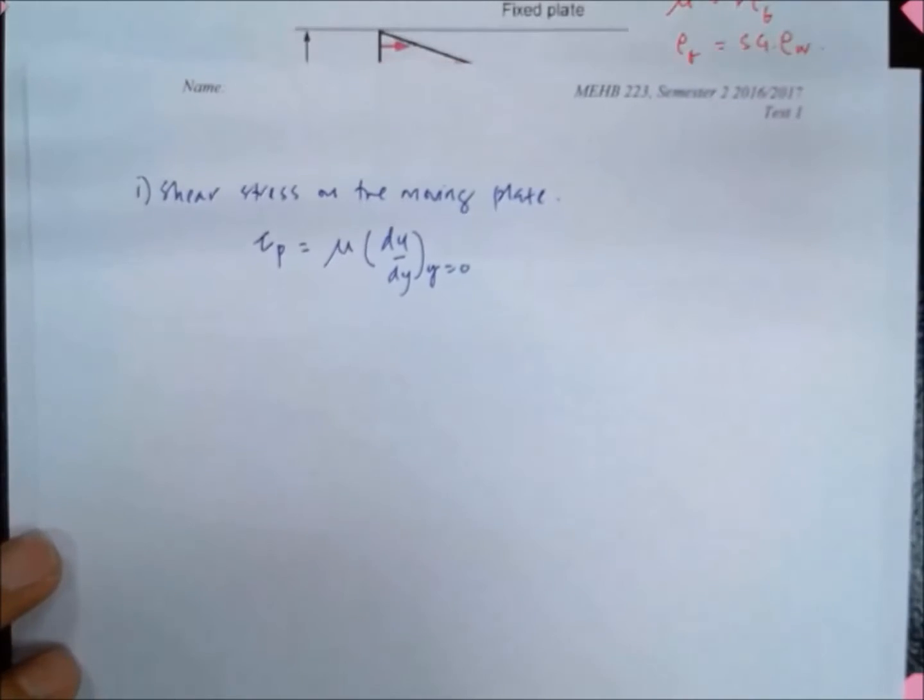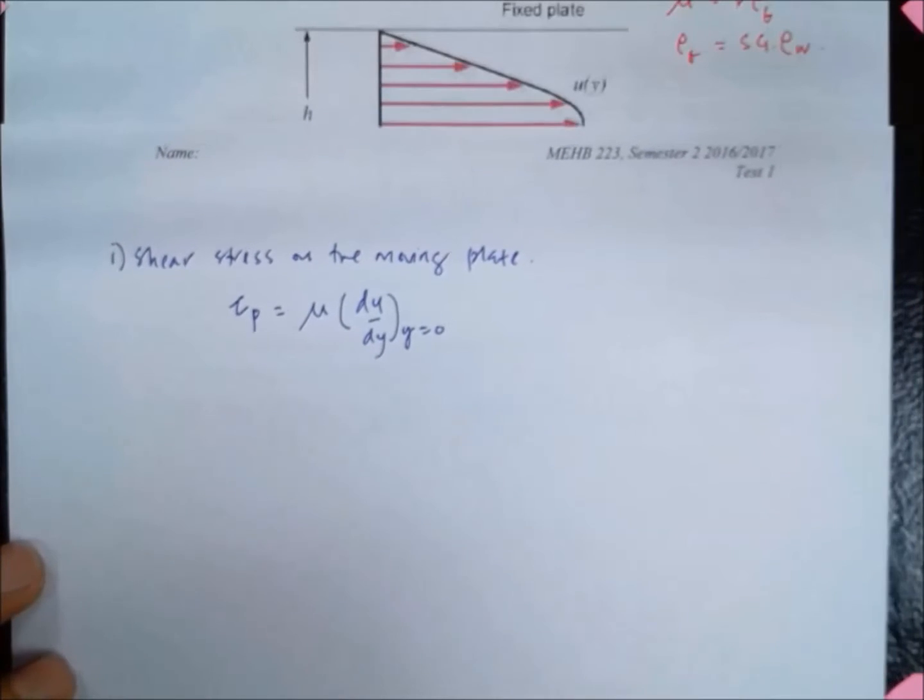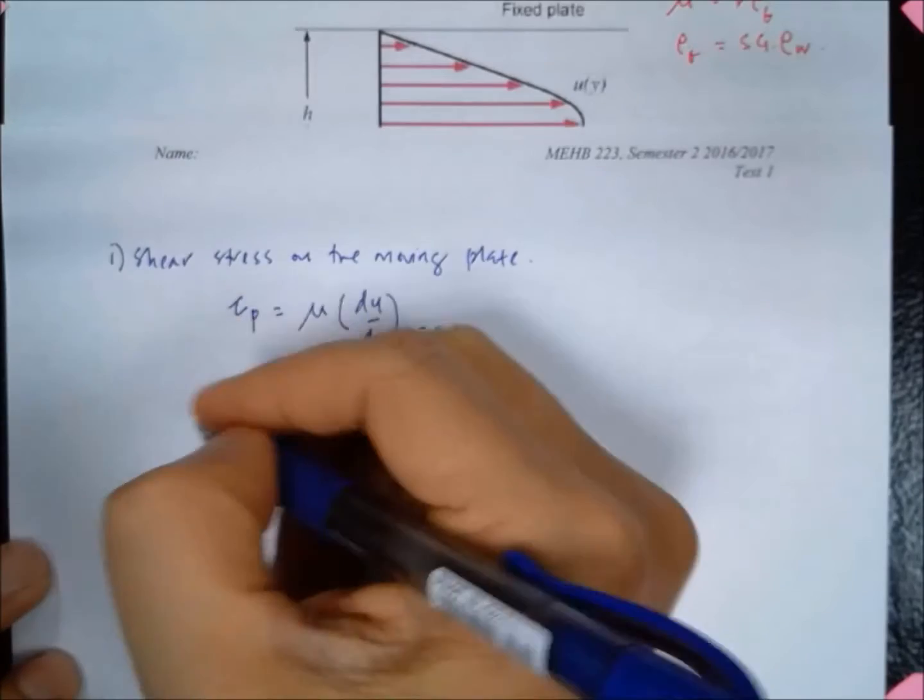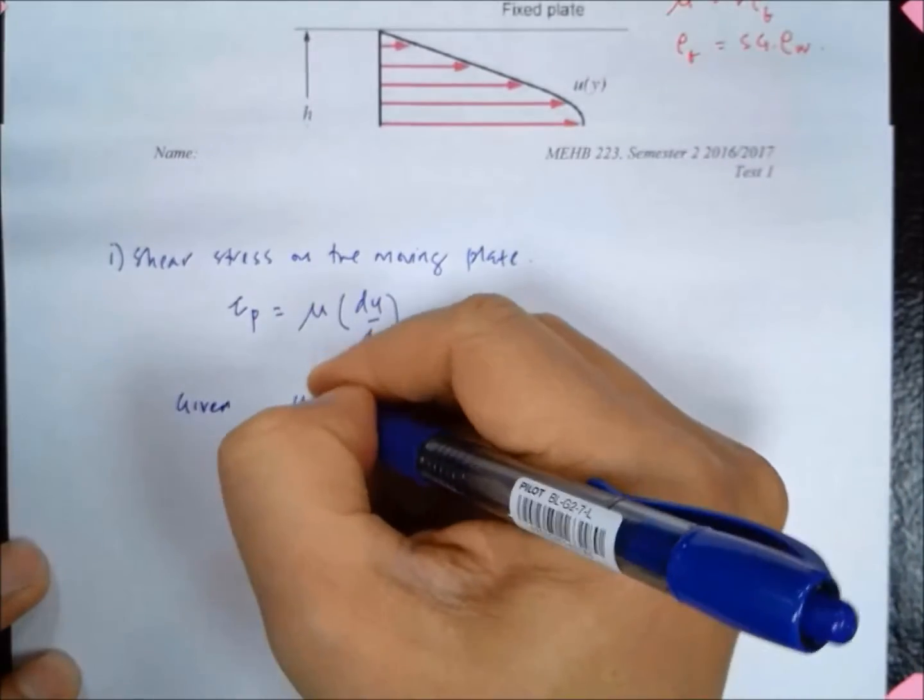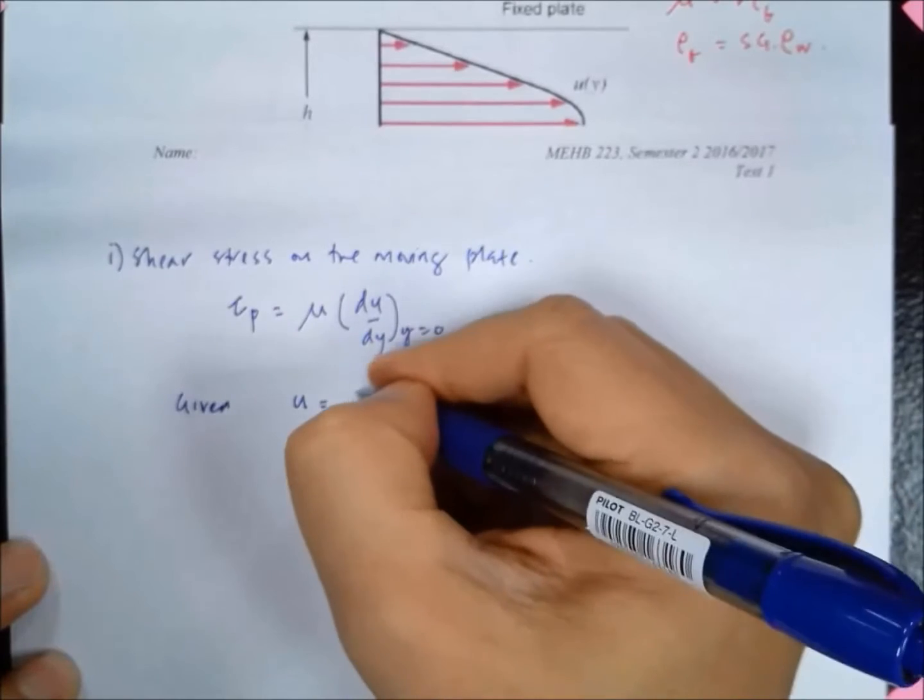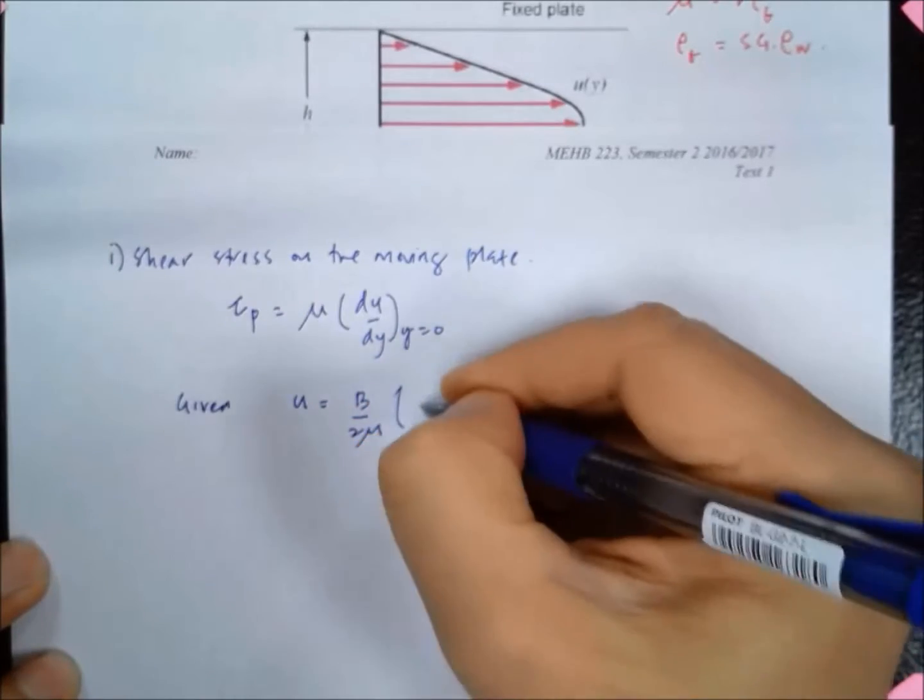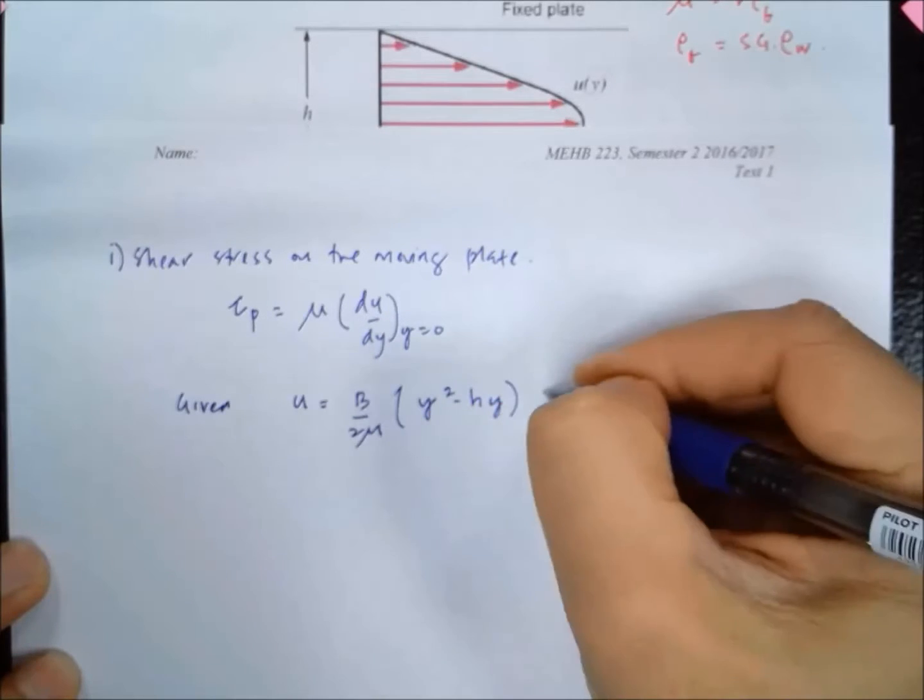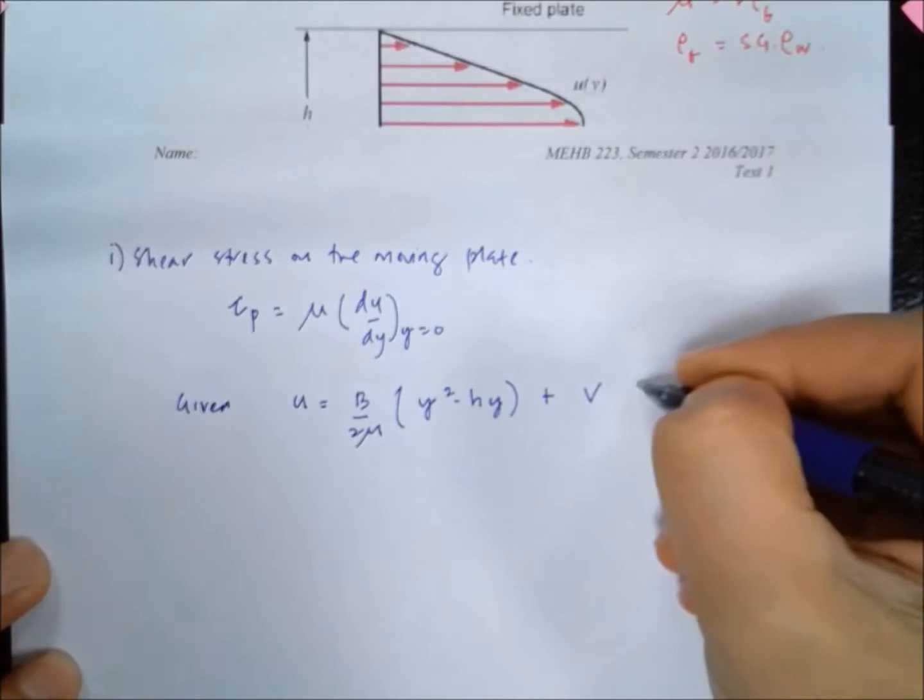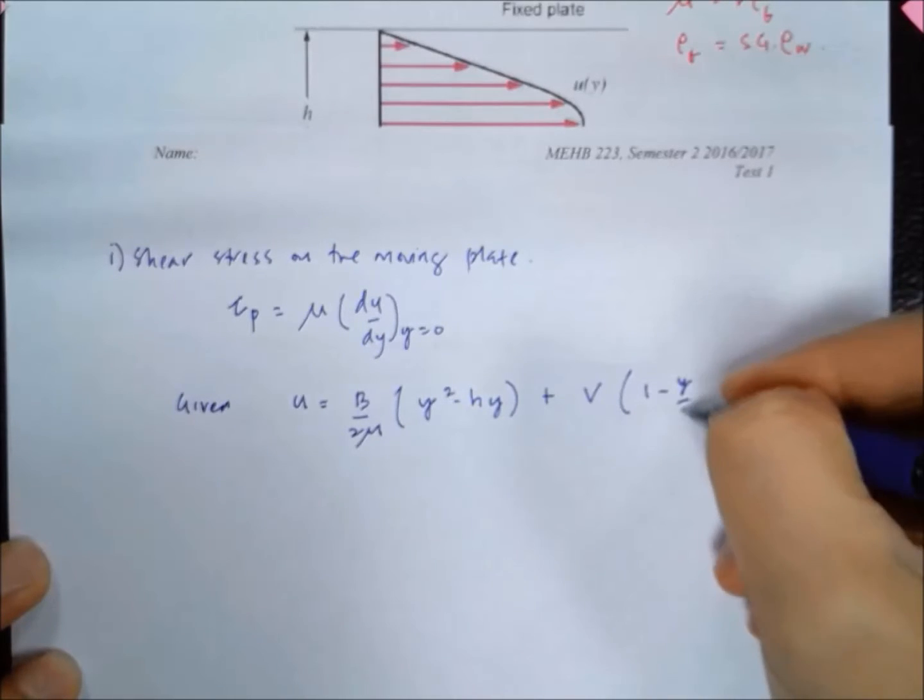We are given that the equation for the velocity profile is u equals B over 2 mu times (y² minus hy) plus V times (1 minus y over h).